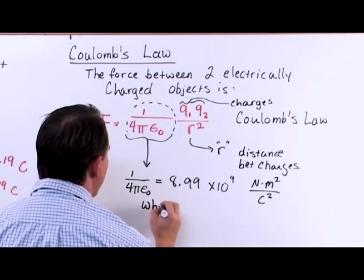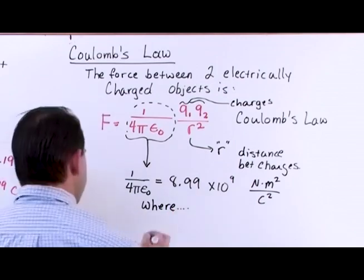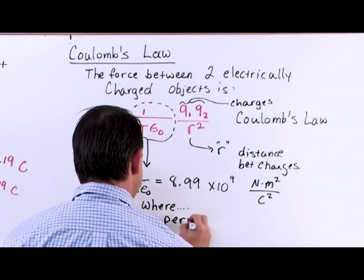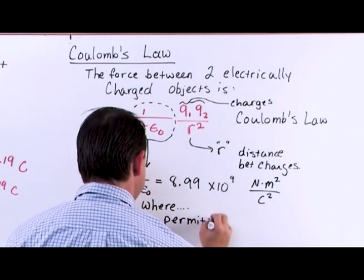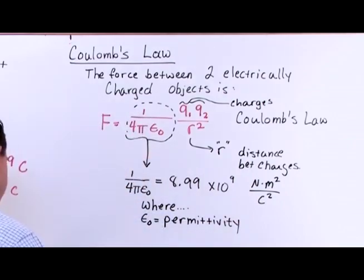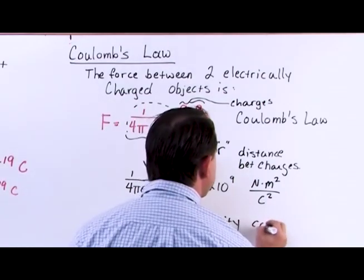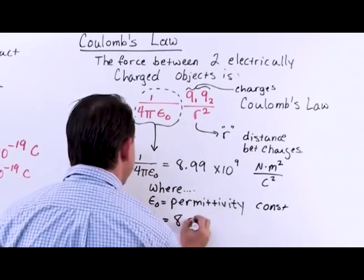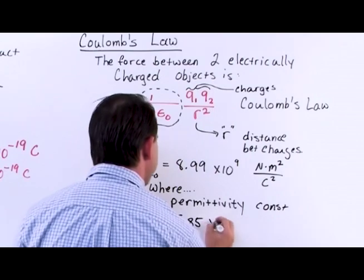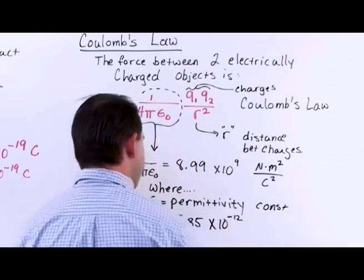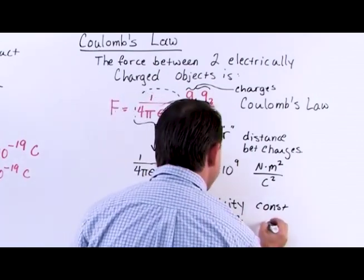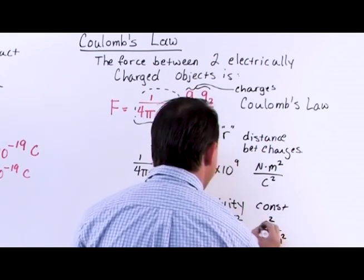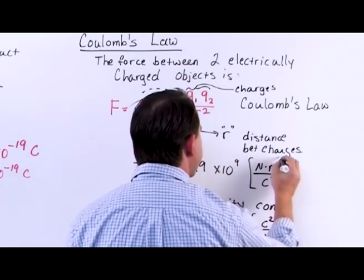Now let me write down a few more things. Epsilon naught is something we call the permittivity constant, and it's equal to 8.85 times 10 to the minus 12, with units of coulombs squared per newton meter squared. These are the units of this constant right here.